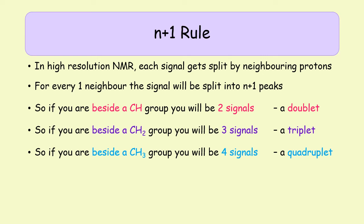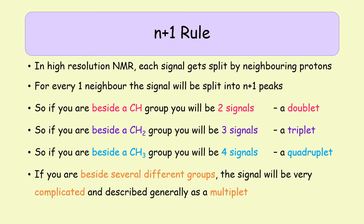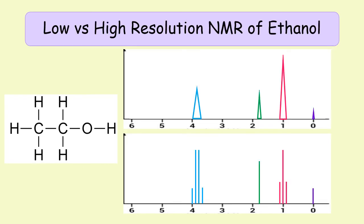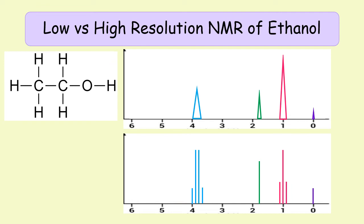Based on whether a signal is a doublet, triplet, quadruplet, or something more complicated, you can work out what group is neighboring what other group. If you're beside multiple groups, the splitting becomes very complicated. We're going to show the difference between low and high resolution for ethanol and explain every single peak. Looking at ethanol's NMR, in both low and high resolution we have four signals, even though the molecule only has three types of proton. That fourth signal at zero is our TMS reference.